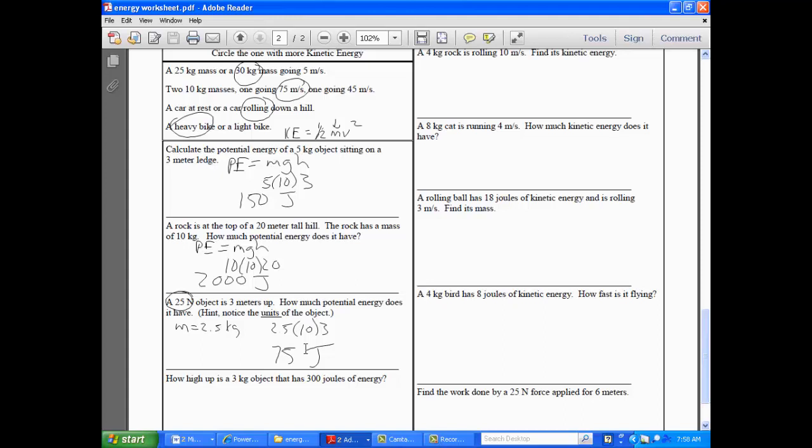All right. Next one. How high up is a 3 kilogram object that has 300 joules of energy? This one's a little bit different. It's giving us the amount of joules. It's giving us the energy. So we have 300 is equal to 3 times 10 times H. So we are left with 300 equals 30H. H is going to equal what? 10. Good. 10 meters. So any questions with those ones in that column?